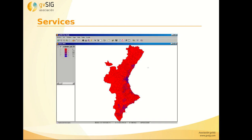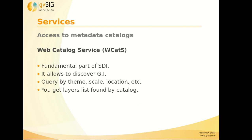So here we can see an example. It's a vector layer in the origin, and we can also see the layer as a vector layer in GBC, and we can apply a legend. We will see the example in the next video. The other services available are the web catalog service to look for cartography, for example doing a query by theme, by scale, location, etc. And we will get layers with that search.